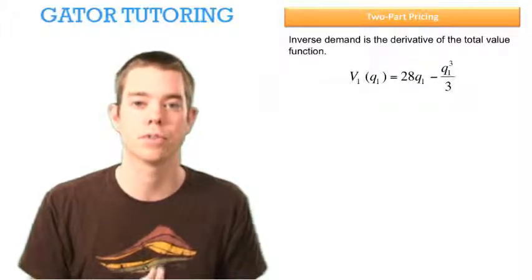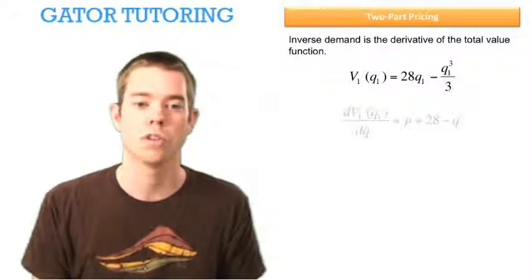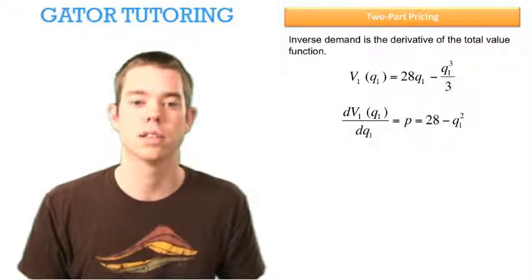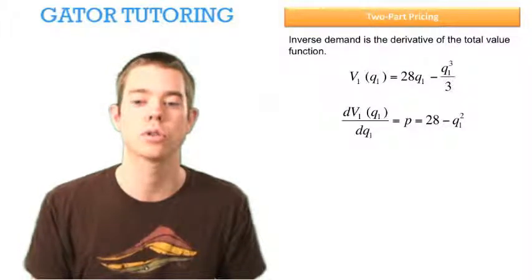So here's the total value function for the type 1 customers. We take the derivative of it with respect to Q, and we find that our inverse demand is equal to P equals 28 minus Q squared.